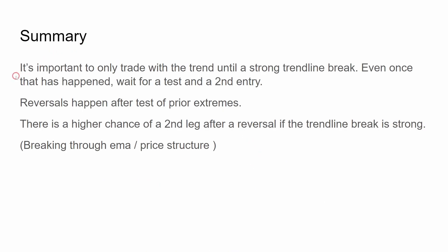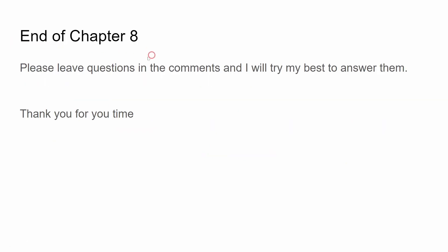Summary. It's important to only trade with the trend until a strong trend line break. Even once that has happened, wait for a test and a second entry. Reversals happen after a test of prior extremes. There's a higher chance of a second leg after a reversal if the trend line break is strong — breaking through the EMA or price structure. This is the end of Chapter 8. Please leave any questions in the comments and I will try my best to answer them. Thank you for your time, and if you learned anything, please consider subscribing.